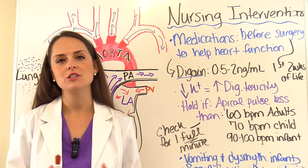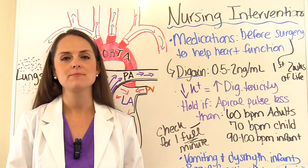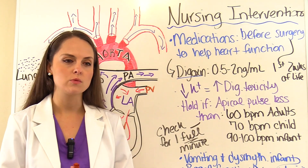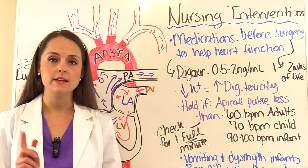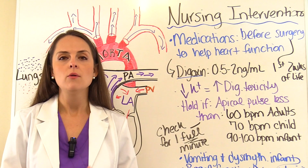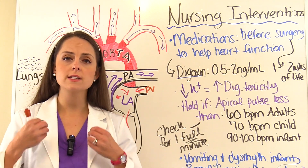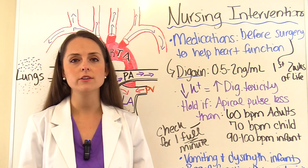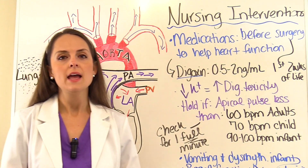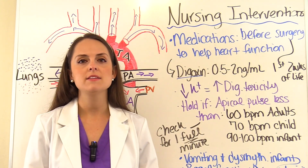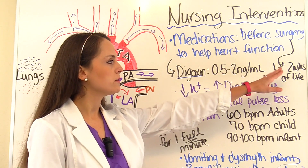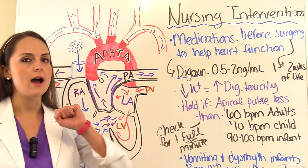This condition can be diagnosed with a chest X-ray, an EKG, or an echocardiogram — which is most commonly used. An echocardiogram is an ultrasound of the heart that allows visualization of the structures. Once diagnosed, the patient will have surgery, usually performed within the first two weeks of life.